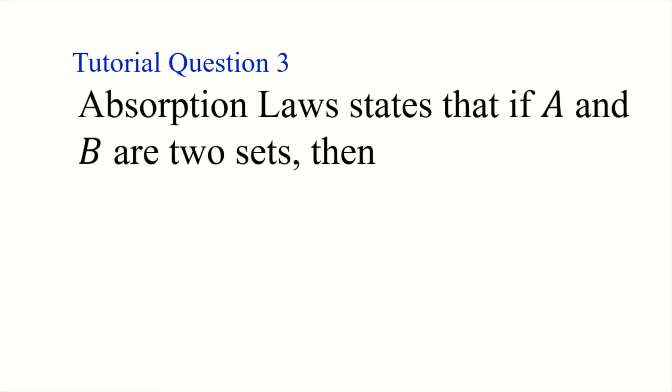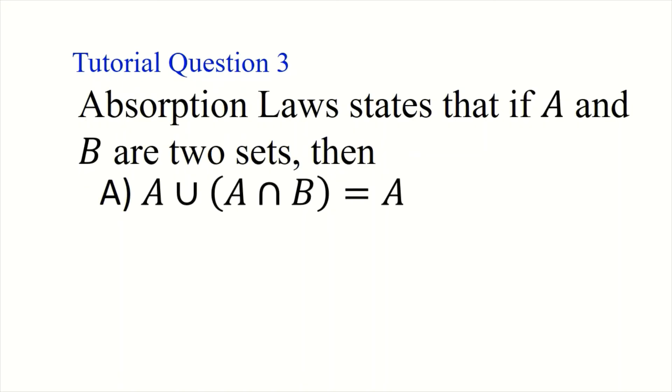Tutorial question three. The absorption law states that if A and B are two sets, then A union (A intersection B) is equivalent to set A. From the name, absorption means A wants to absorb B totally, and that is only possible if A union (A intersection B) equals A. Let's take a look at this law and see if it is correct.